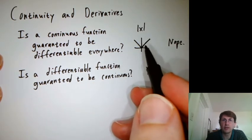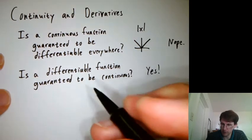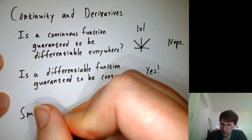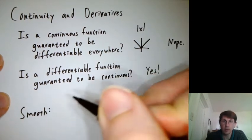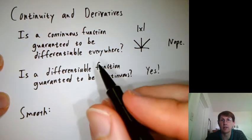Absolute value of x is continuous, but it's not differentiable. There's this other word called smooth.